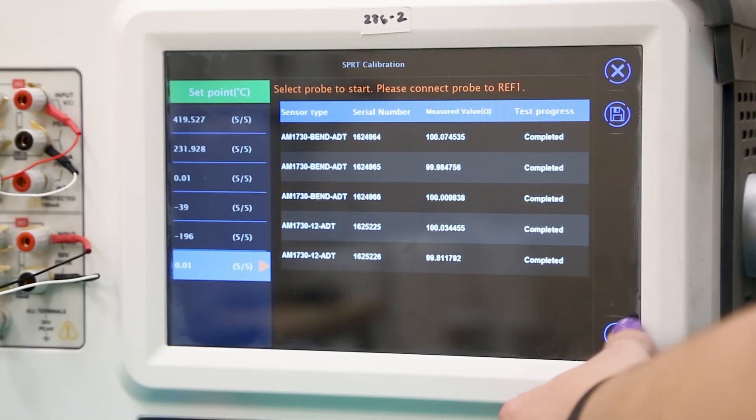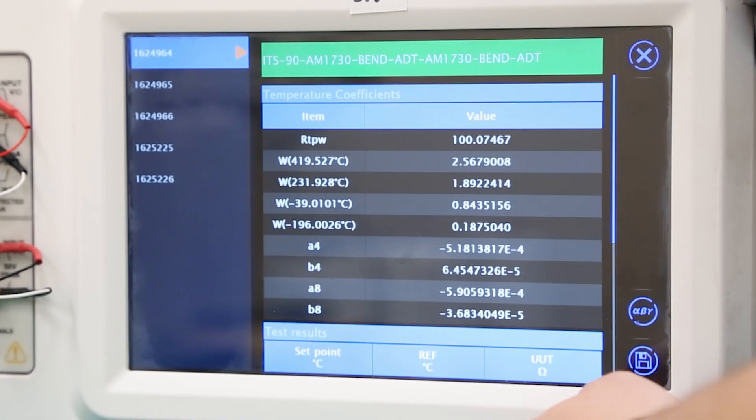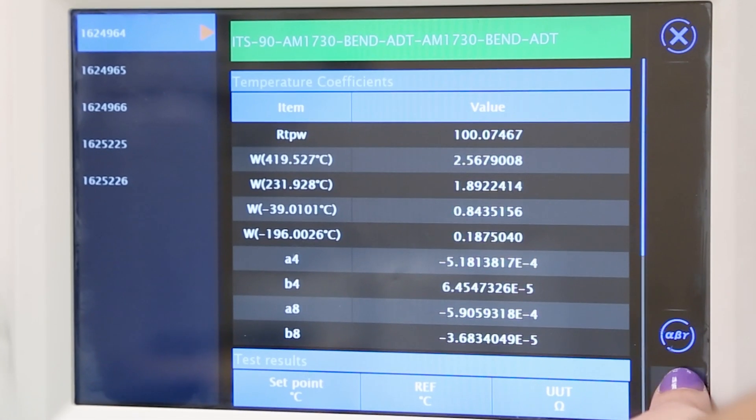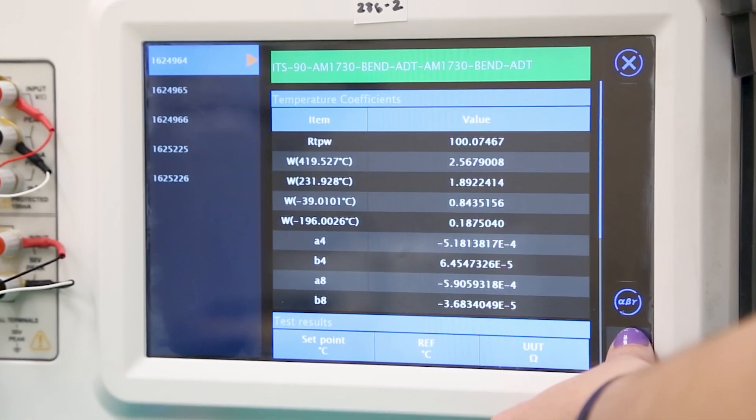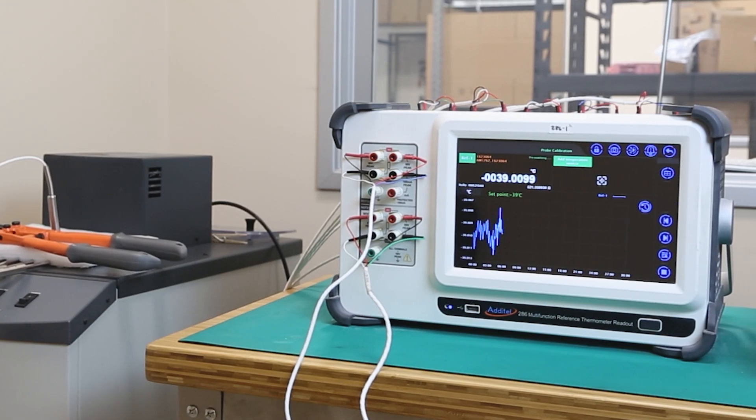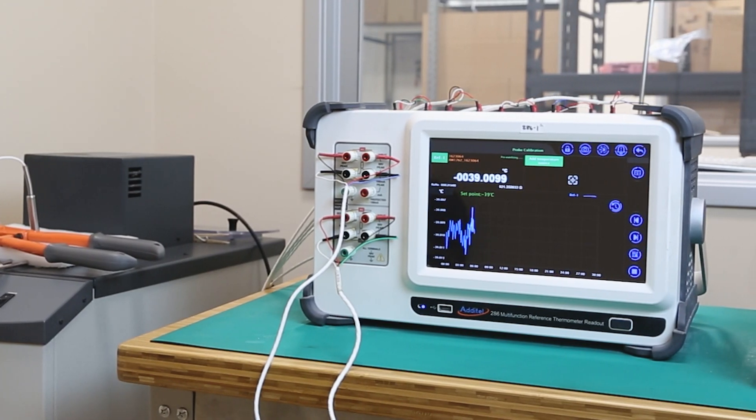Once all testing is complete, calibration results can be saved and reviewed immediately. The Adytel 286 automatically calculates resistance ratios, ITS-90 temperature coefficients, temperature averages, and more, making it one of the most intuitive and easy-to-use electrical bridges on the market.